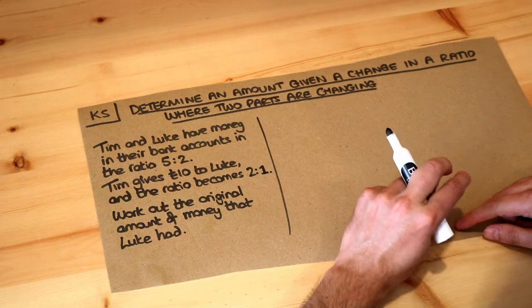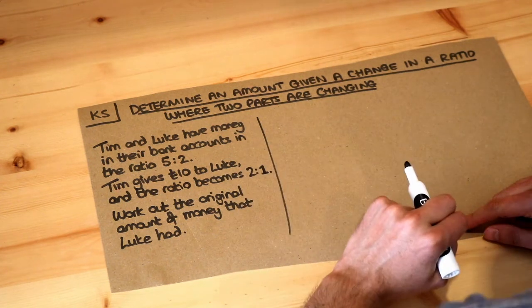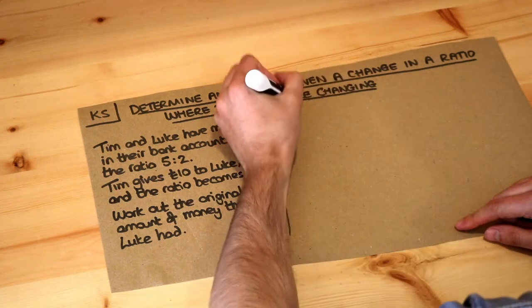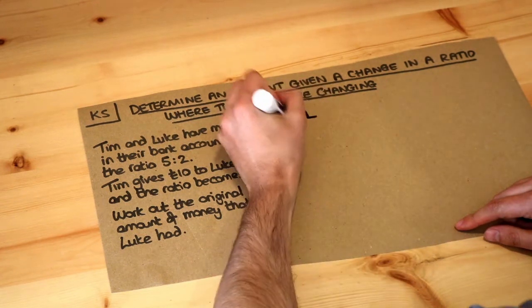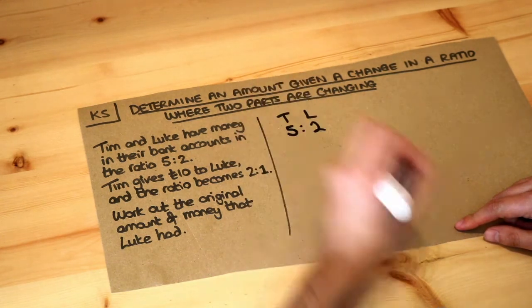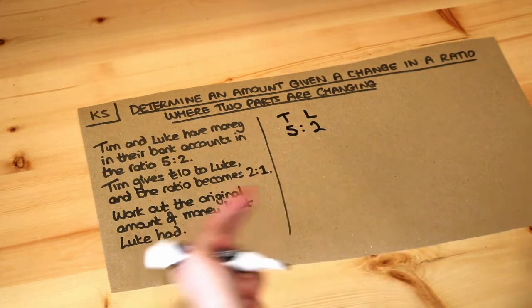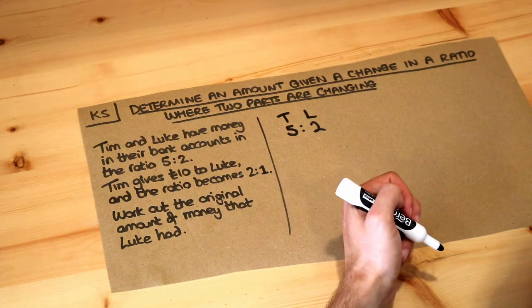Now this is quite a hard problem and we're going to use an algebraic approach to solve it. Now if we're told the ratio of Tim to Luke's money was 5 to 2, then how could we actually represent the amount of money that each of Tim and Luke had?